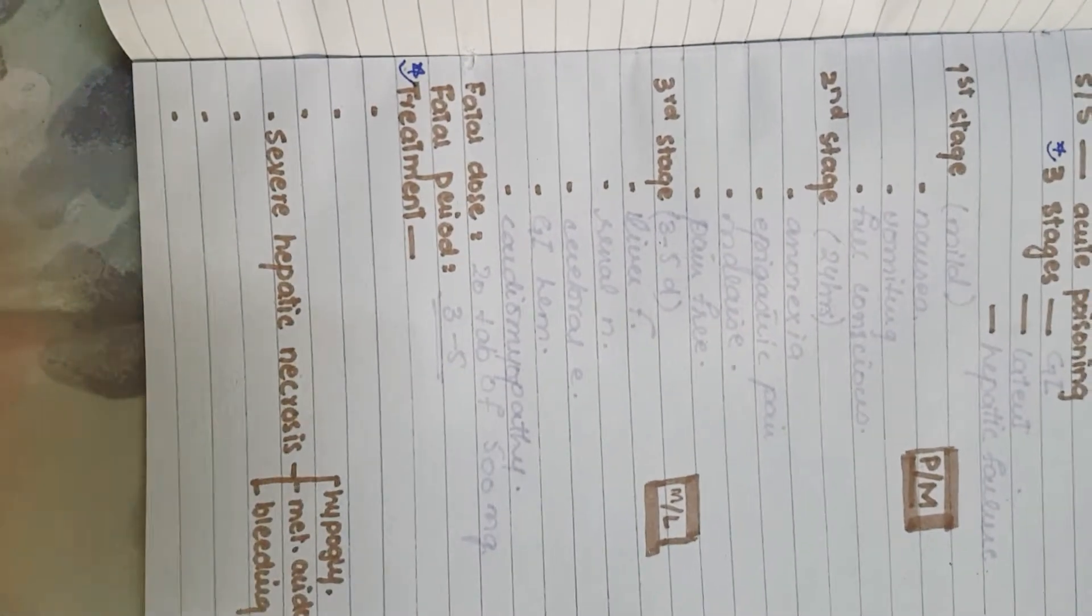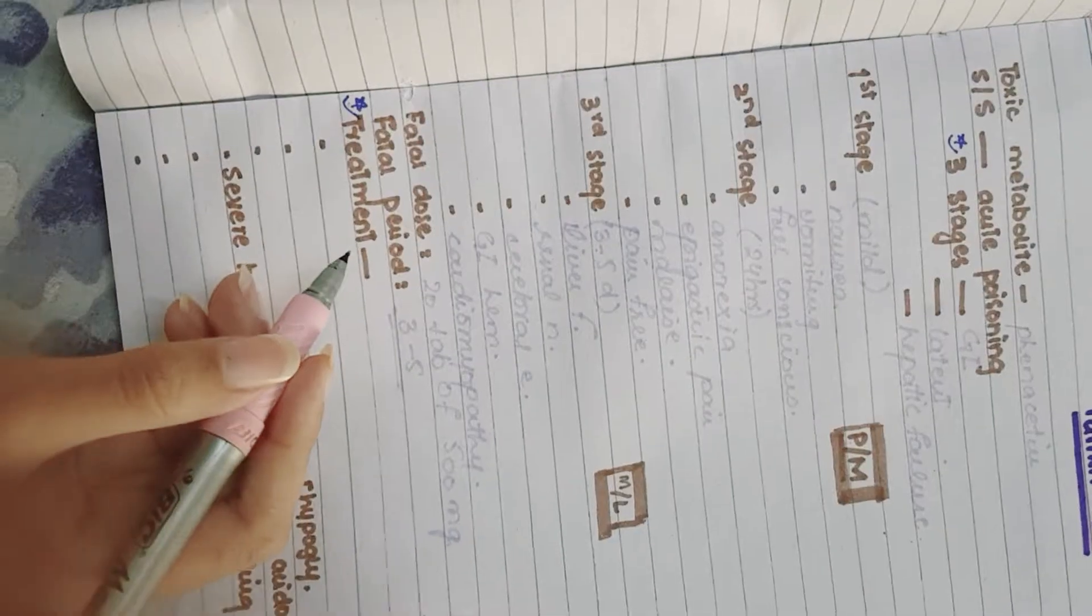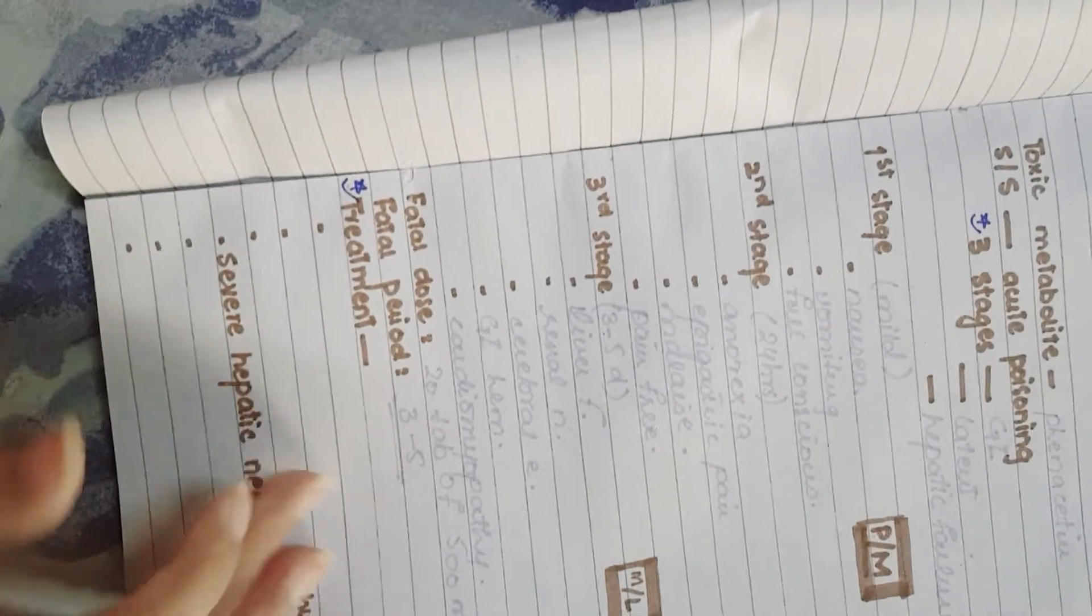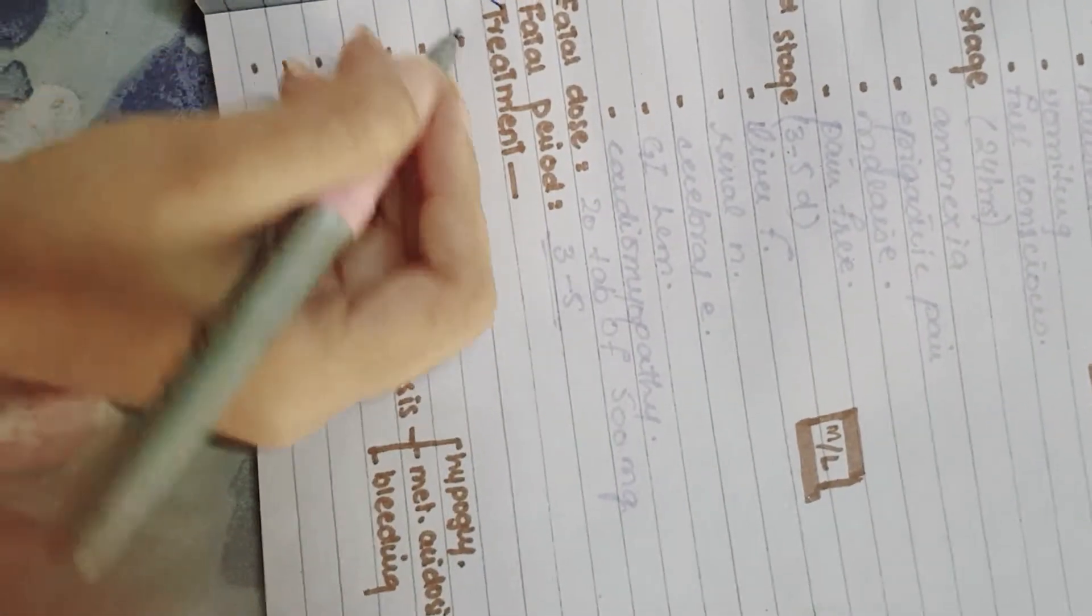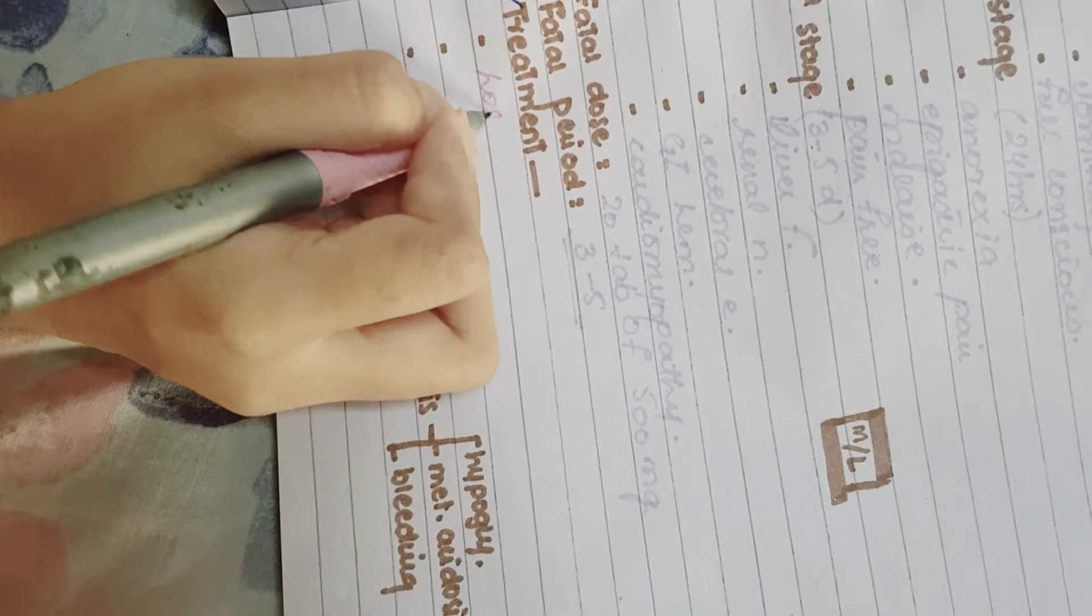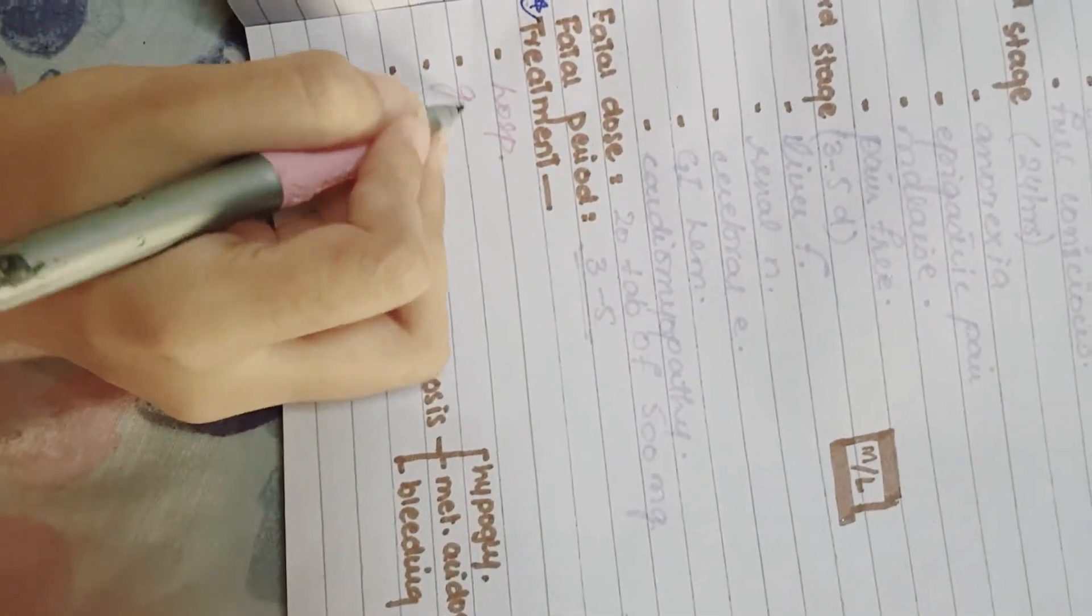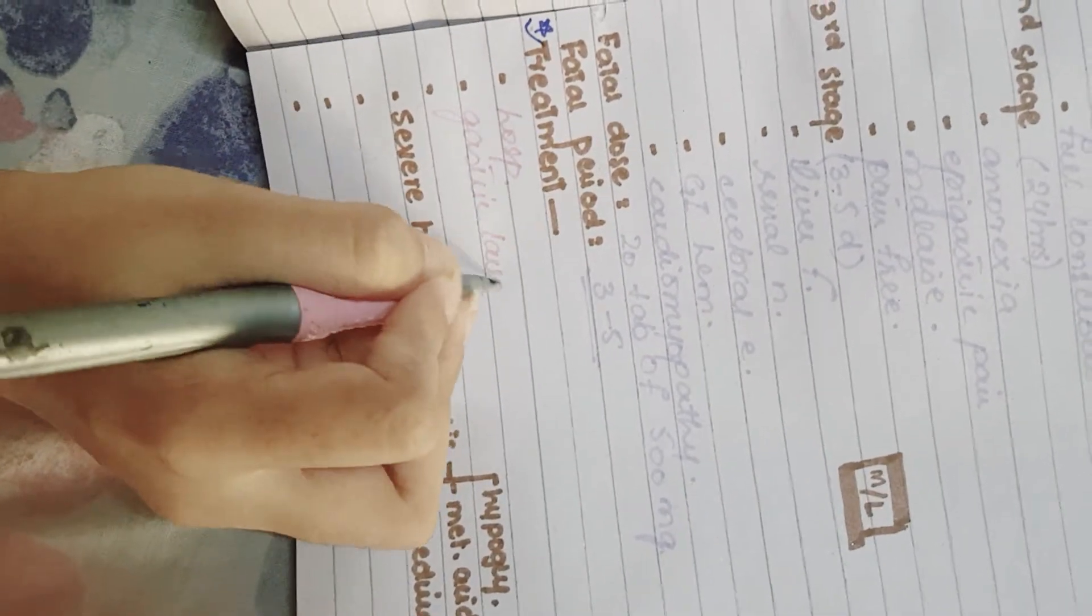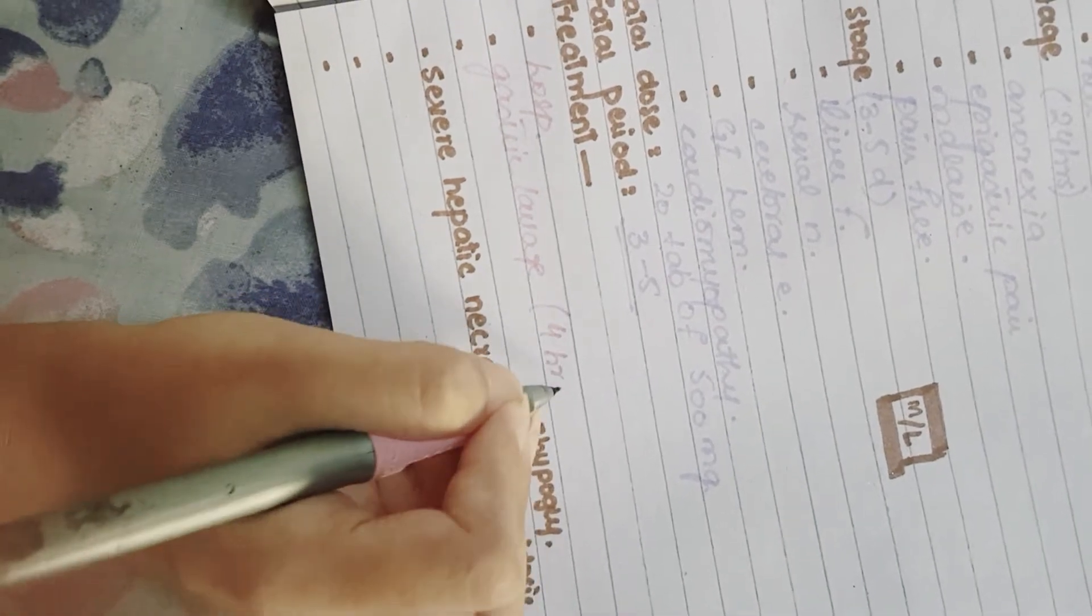Now we are going to see how the patient is managed. When a patient of paracetamol poisoning comes to you, you have to immediately admit him into the hospital. This is the first step. Then you need to carry out gastric lavage within four hours.